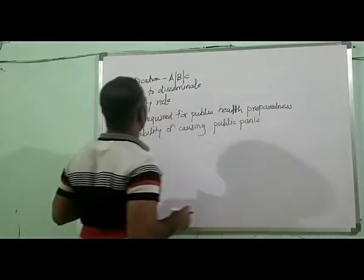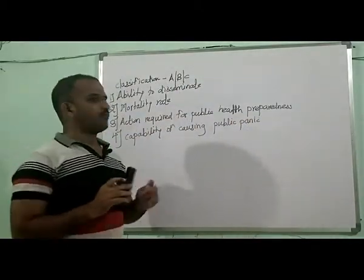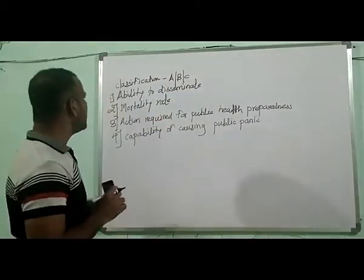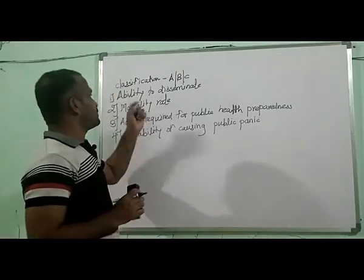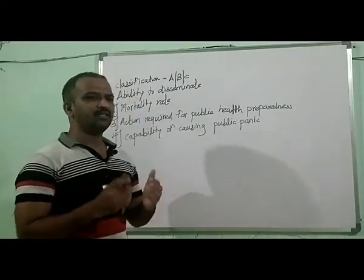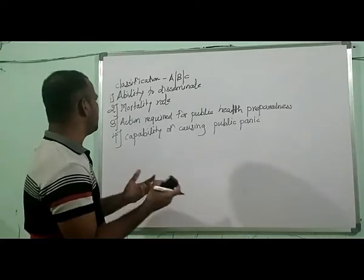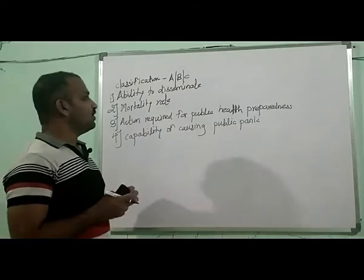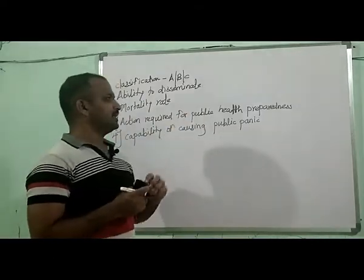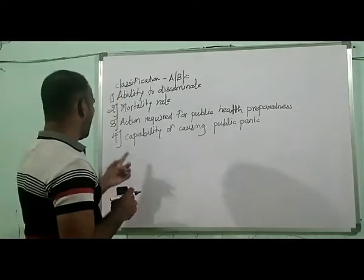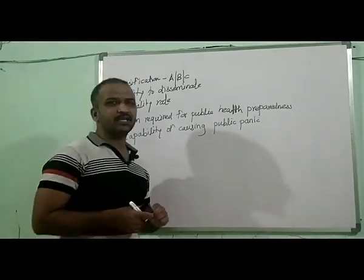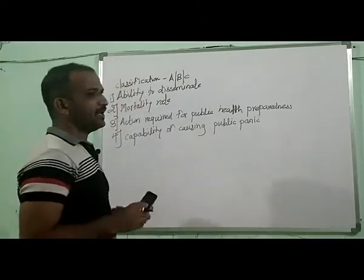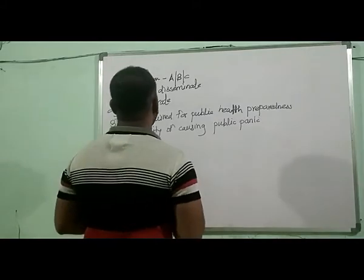To revise: the biological agents of warfare are classified into three types — Category A, B, and C — based on four criteria: ability to disseminate (whether easily transferred from one human to another), mortality rate, actions required to maintain public health preparedness, and the capability of causing public panic.